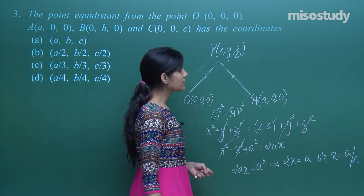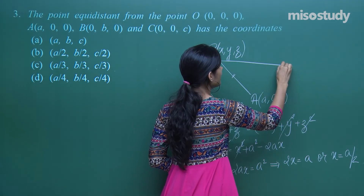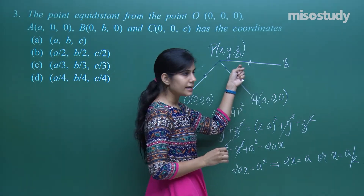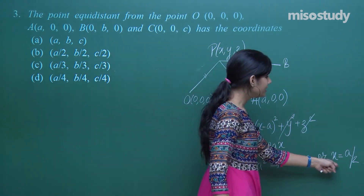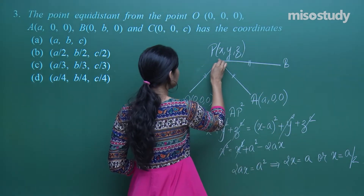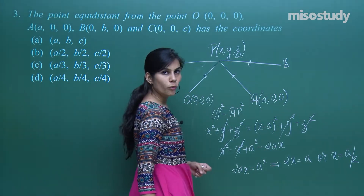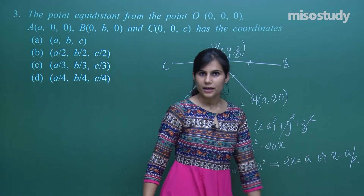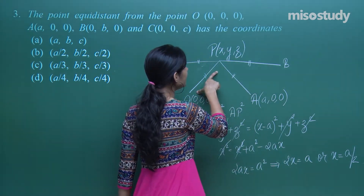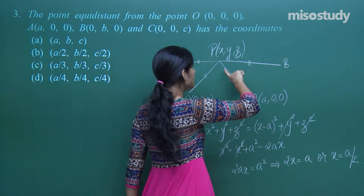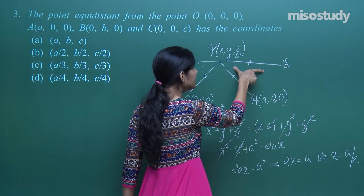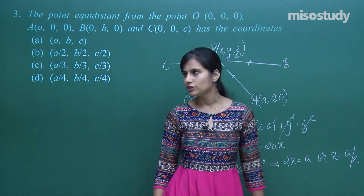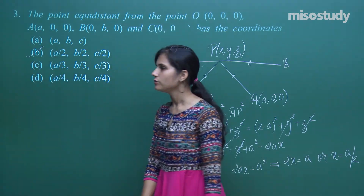This gives 2ax = a², so x = a/2. Then using OP = BP gives y = b/2, and using OP = CP gives z = c/2. By these three relations, the coordinates of the equidistant point are (a/2, b/2, c/2).